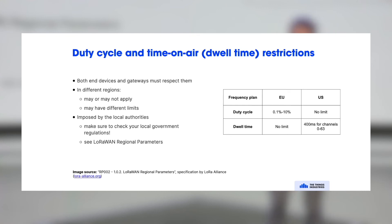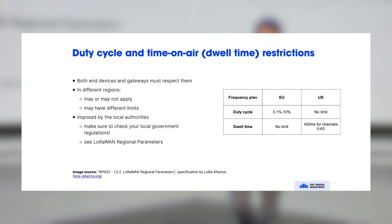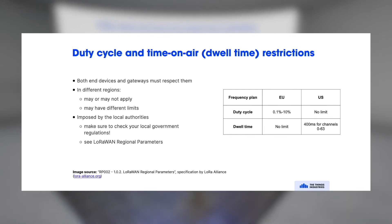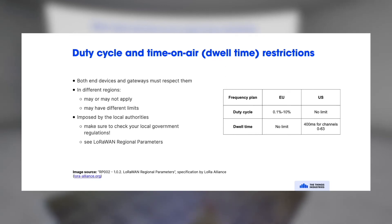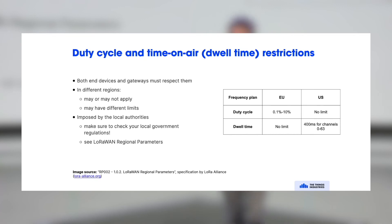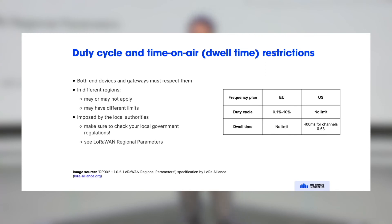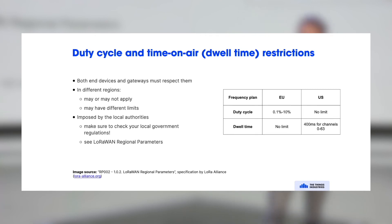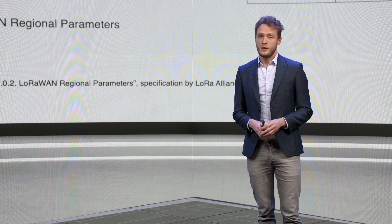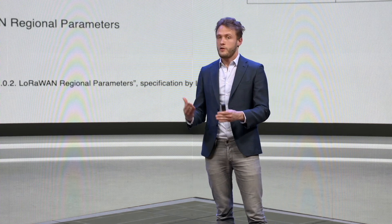LoRa operating in the unlicensed spectrum also requires consideration of the duty cycle and time on air, which differ by region. In the European Union there is a duty cycle — expressed as a percentage of time your end device can transmit, with the remainder silent. In the US there is no duty cycle limit, but there is a dwell time limit — the maximum time it takes to send a message. These differences are all specified in the regional parameters. This is also the main reason why you cannot have voice calls over LoRa: continuous transmission is not possible, not only because of battery life but also because of the duty cycle.